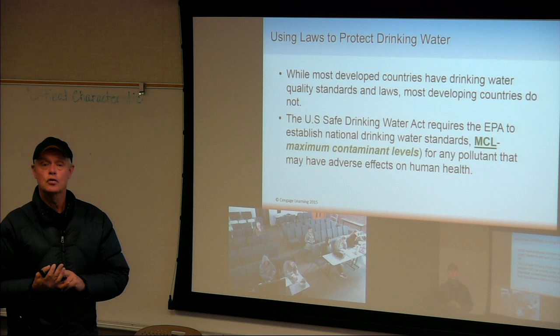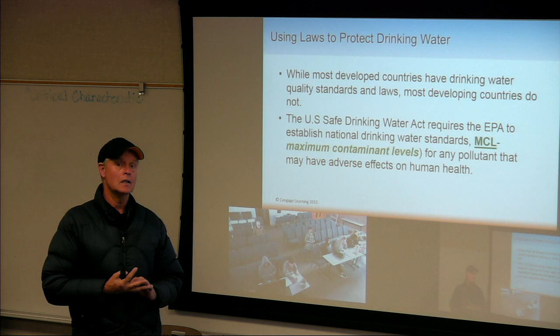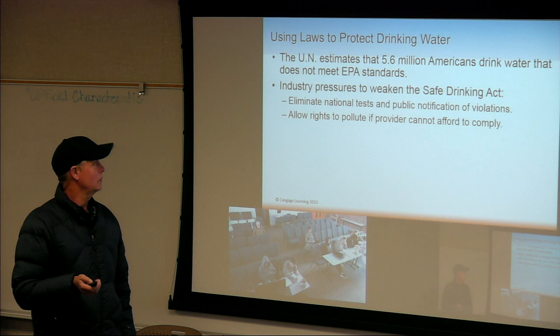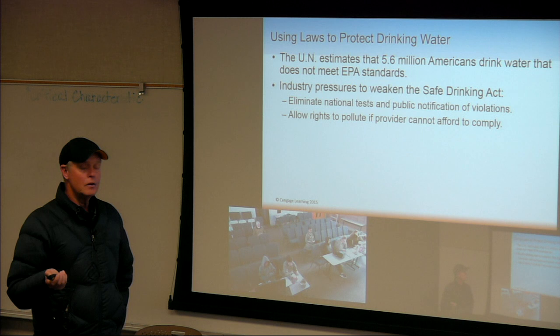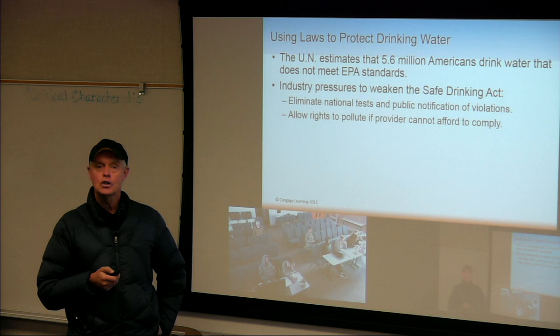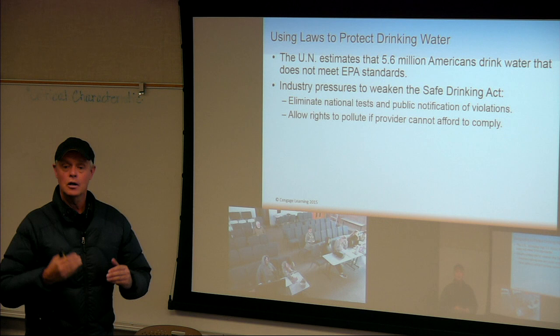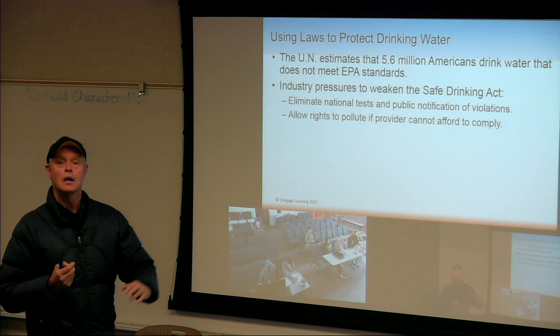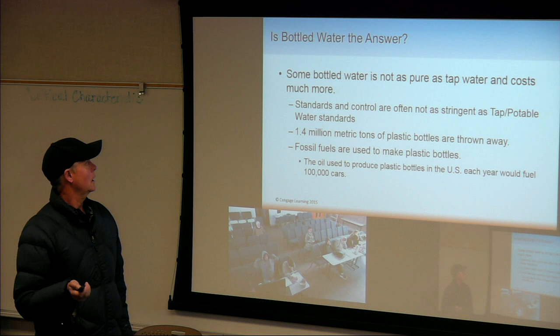What happened in Michigan? The people there ignored and hid the fact that their lead levels were above the maximum contaminant level. Back in the 70s, we saw the Safe Drinking Water Act. We were in the habit of just dumping our sewage in the river. Rachel Carson and others brought attention to that, and we developed the EPA — Environmental Protection Agency — and started putting layer upon layer of different laws for safe drinking water.